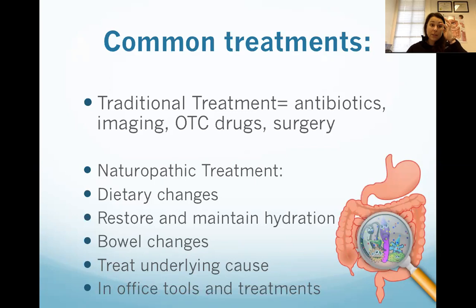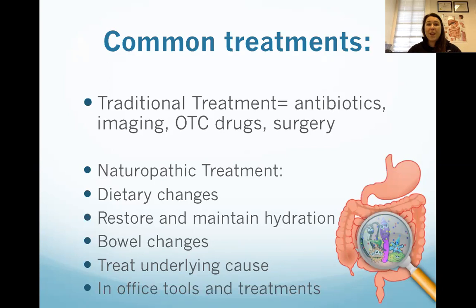Getting to common treatments of abdominal pain — first and foremost, we want to rule in or out different diseases or causes. Common treatments in the conventional medical world include antibiotics, imaging to assess the situation, over-the-counter drugs or medications, and surgery when it's severe. Surgery definitely has its time and place.